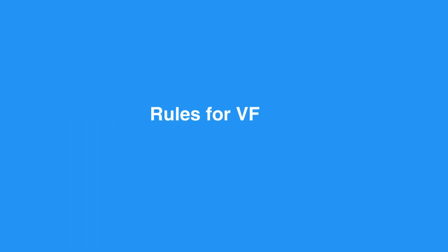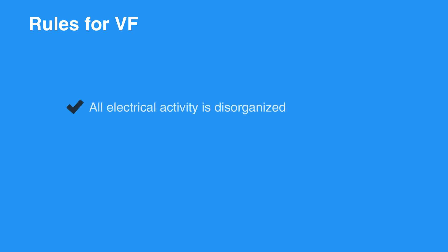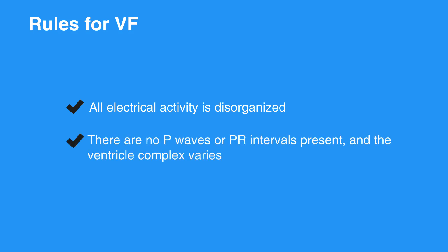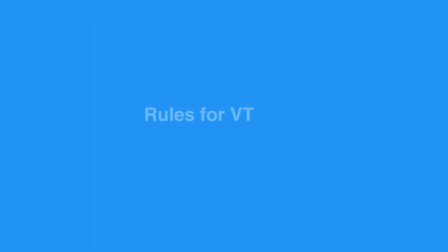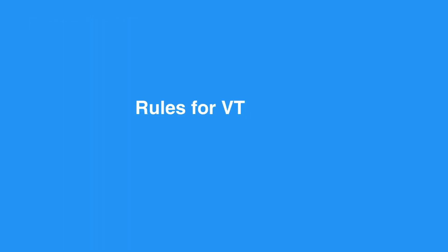The rules for VF include the regularity of having no shape to the QRS complex, because all electrical activity is disorganized. The rate appears rapid, but the disorganized electrical activity prevents the heart from pumping. There are no P waves or PR intervals present, and the ventricular complex varies.